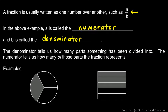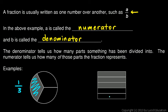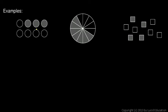In this picture, a circle is divided into three pieces and one of them is shaded, so the shaded part is one-third of the whole — written as one over three. This rectangle has been divided into five horizontal sections and three of them are shaded, so the shaded portion is three-fifths of the whole.